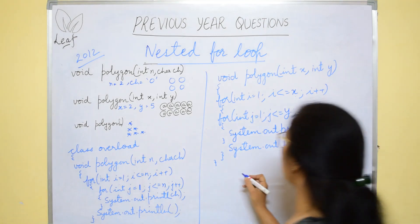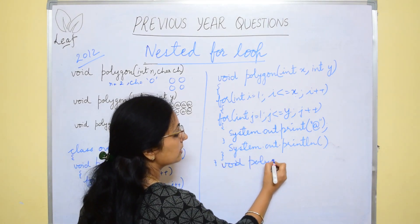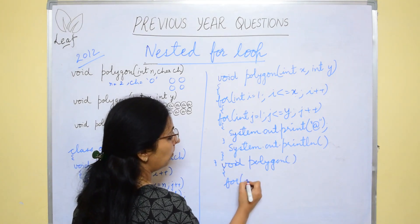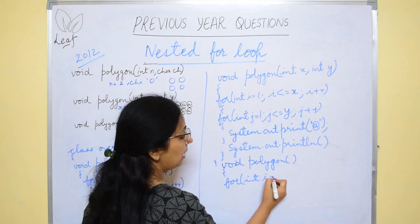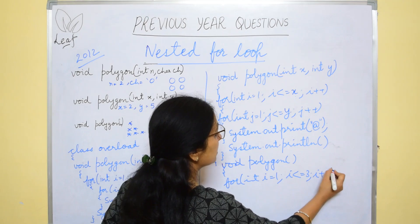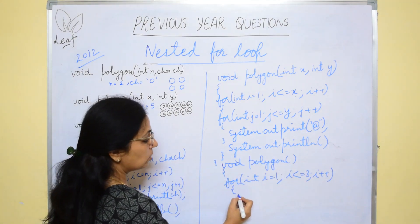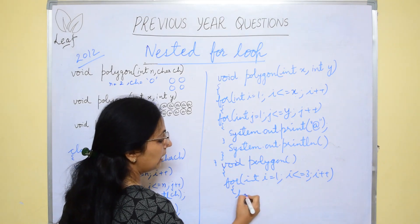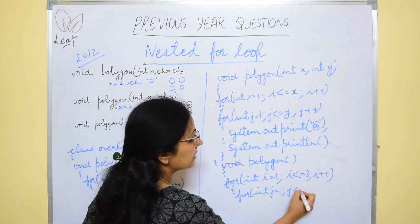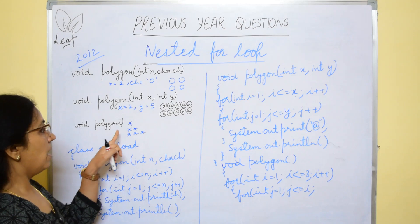And the third pattern, very simple. Void polygon. No argument is given in the question. And we'll be using the for loop int i equals to 1, i less than equals to 3, i plus plus. Why 3? 3 rows are there. So, I have taken i equals to 3. And then inner loop int j equals to 1, j less than equals to i. Why i I have taken here? Because in this, first time in first row, only one column is there.